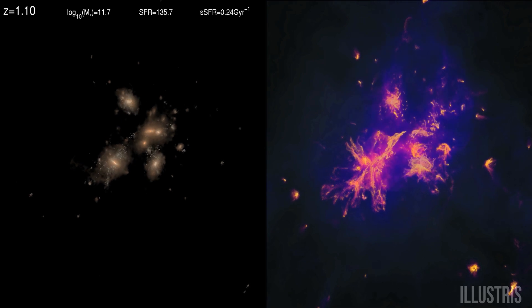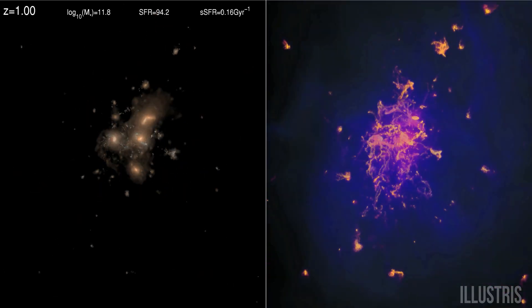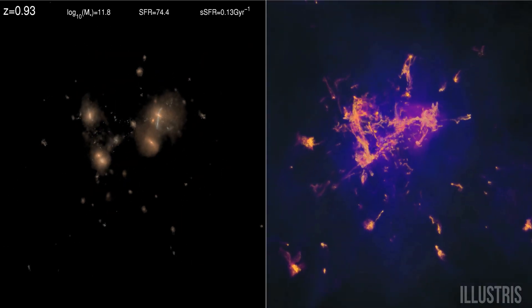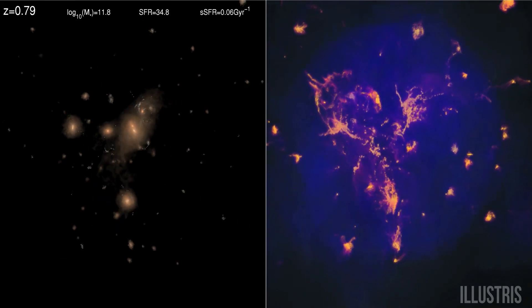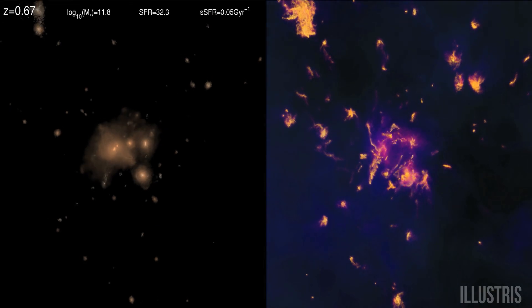As gravity draws these galaxies together, waves of hot gas explode outward. This happens when giant black holes in their centers blast inflowing matter out in ferocious winds and jets.